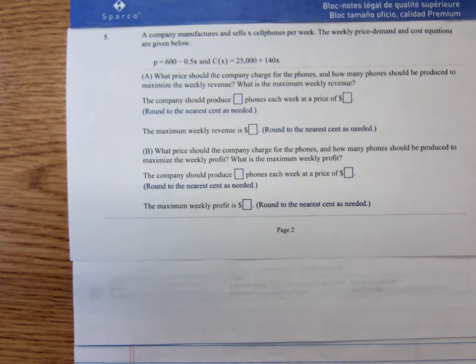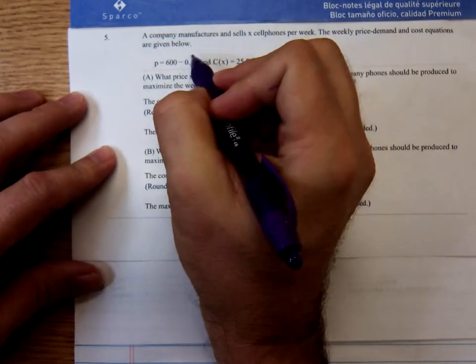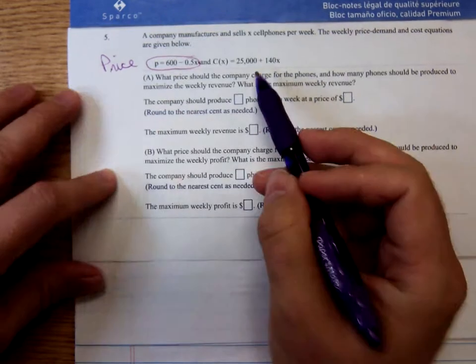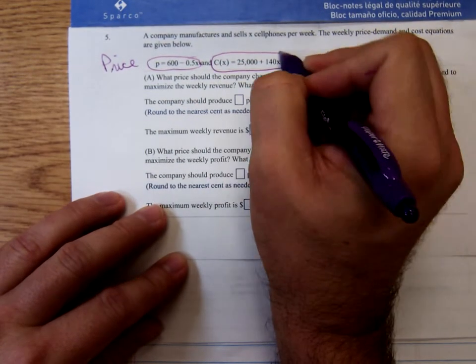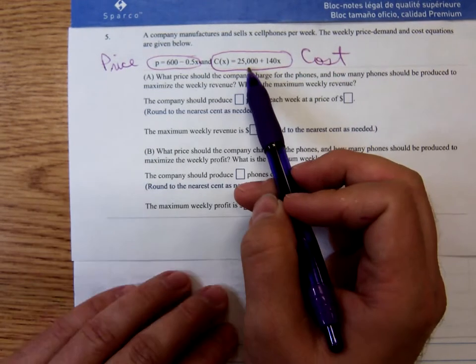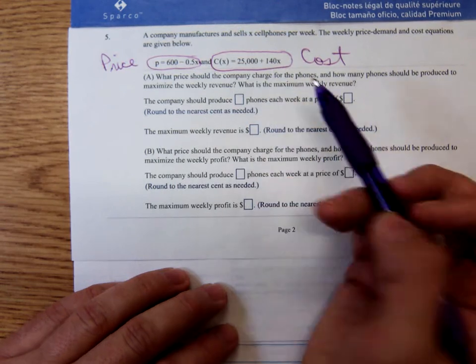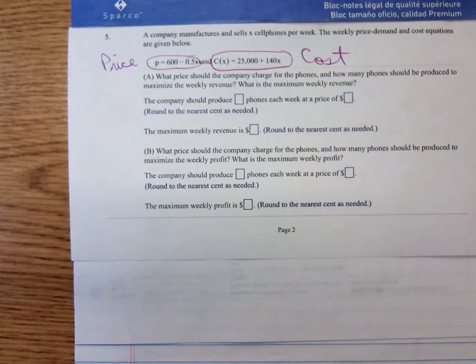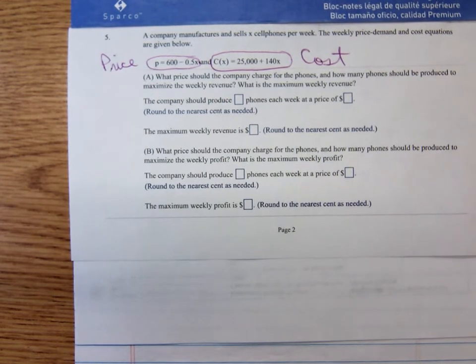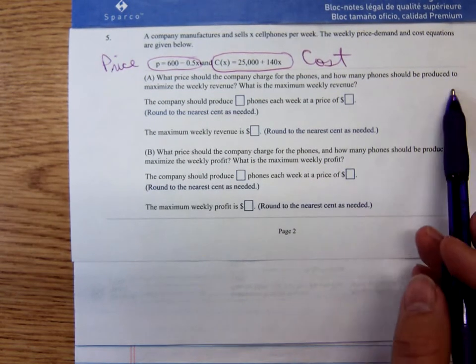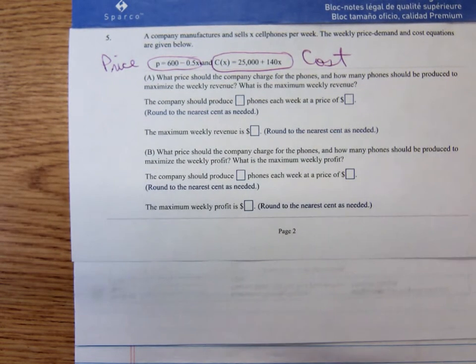A company manufactures and sells X cell phones per week. The weekly price demand and cost equations are given by, here's the price equation, 600 minus 0.5X and there's our cost function. We want to find what price should the company charge for the phones and how many phones should be produced to maximize the weekly revenue and what is the weekly revenue.